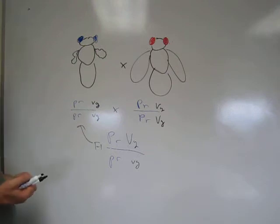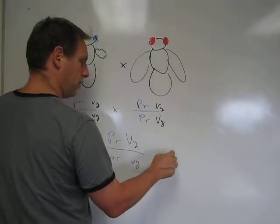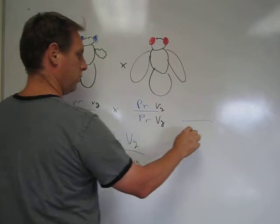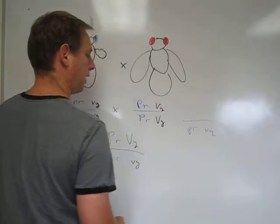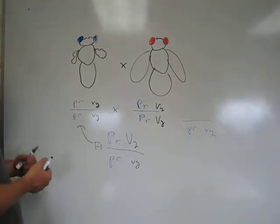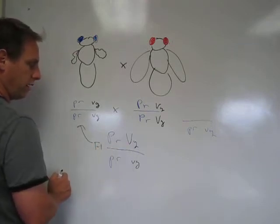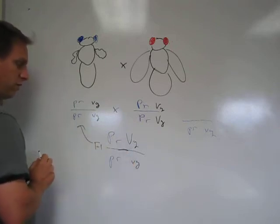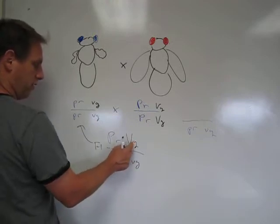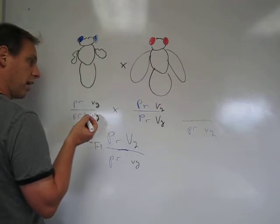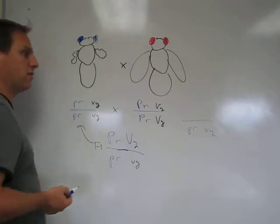Now, if there were independent segregation, what would be the expected genotypes? We know the genotype inherited from the mutant individual is going to be little PR and little VG. What are the possible allelic assortments inherited from the F1? If they're segregating independently, you can transmit the plus alleles together or equally as frequently the recessive alleles together. Likewise, you can transmit the other two combinations equally as well if they were on different chromosomes — but they're on the same chromosome, and we'll see what that means.